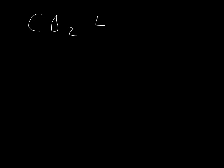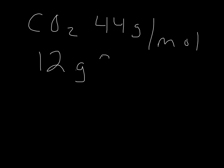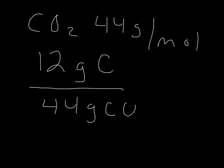So how do we go about doing this? If we recall, carbon dioxide has a molar mass of 44 grams per mole. Now of those 44 grams total, 12 grams of that is actually carbon. So there's 12 grams of carbon for every 44 grams of carbon dioxide. This is essentially the percentage of carbon in carbon dioxide.